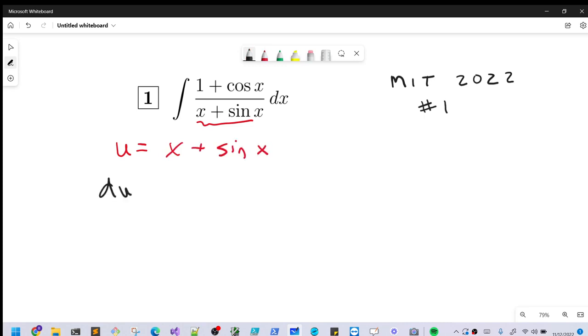And then what we notice, this is a little too obvious I know, is what we have in the numerator is exactly our du. So this is going to simplify really nice.